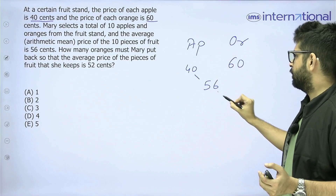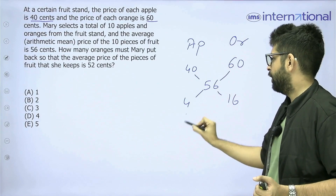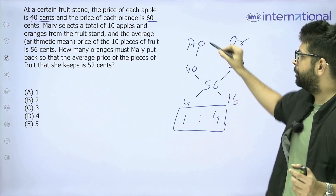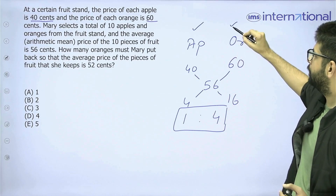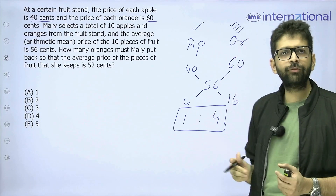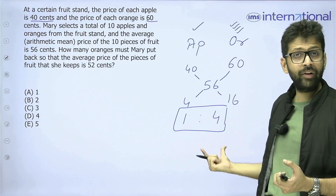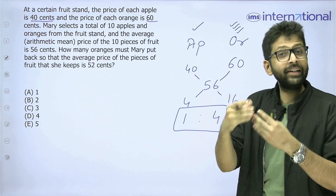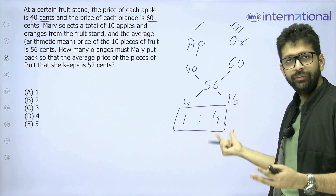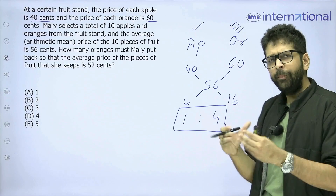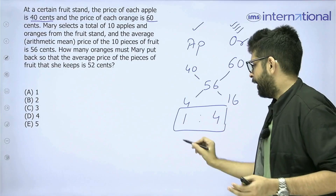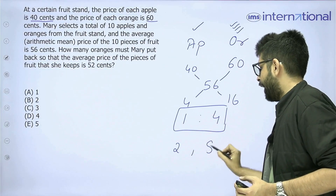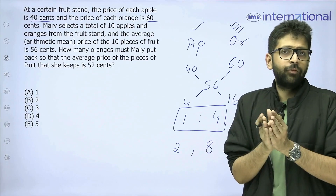Using allegation: 56 − 40 = 16, and 60 − 56 = 4. So the ratio of apples to oranges is 1 is to 4. That means for every 1 apple she bought 4 oranges. Since she bought 10 fruits total and the ratio is 1 is to 4, she would have bought 2 apples and 8 oranges initially.